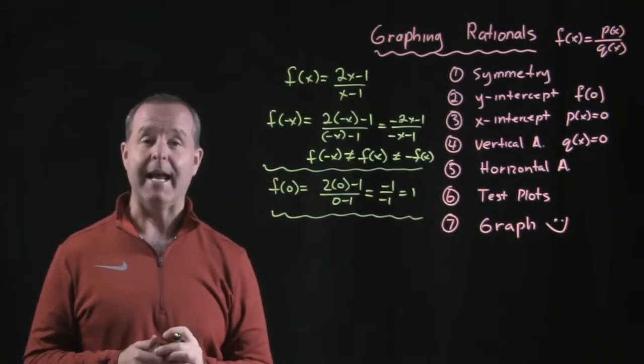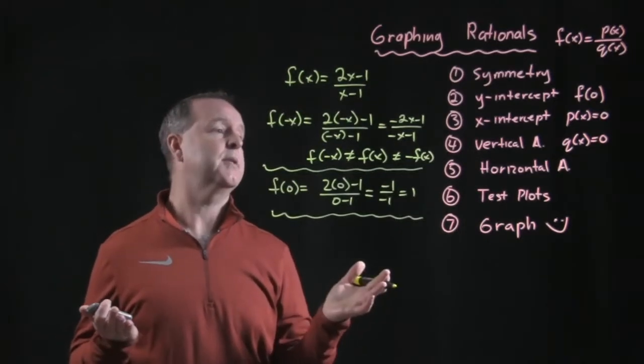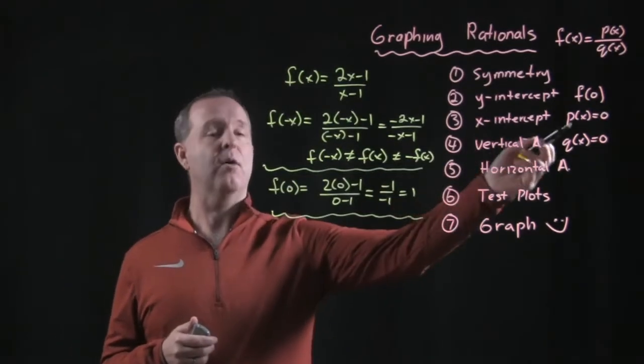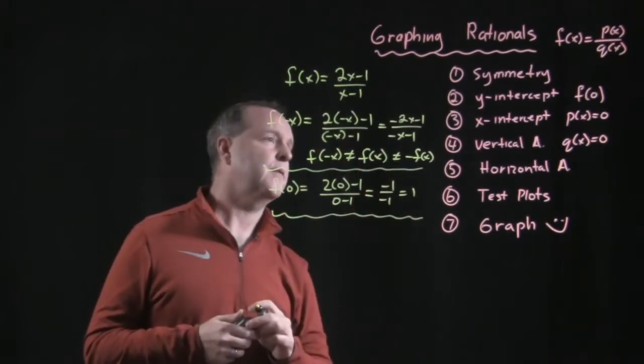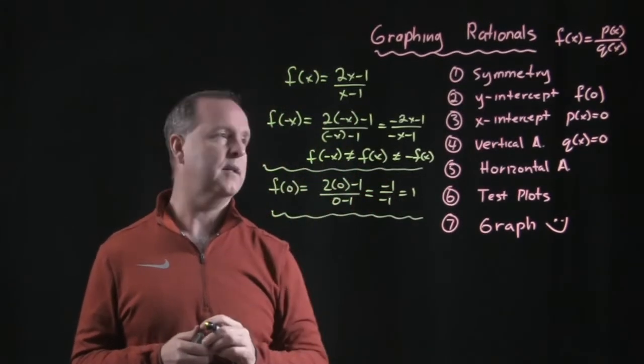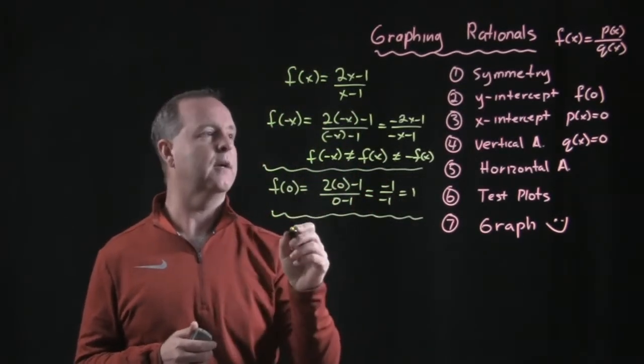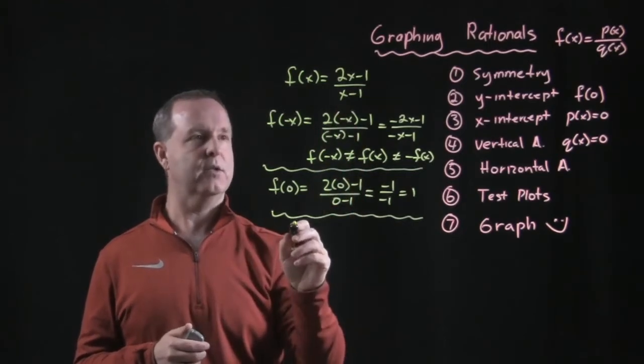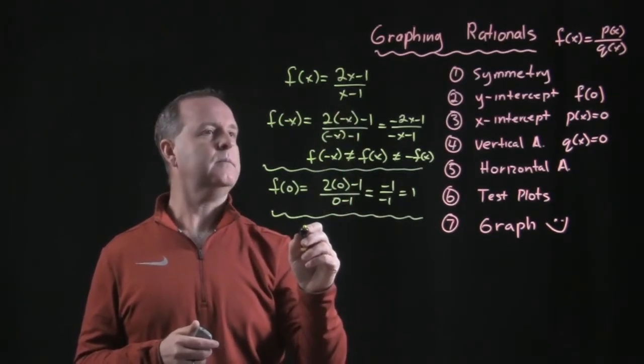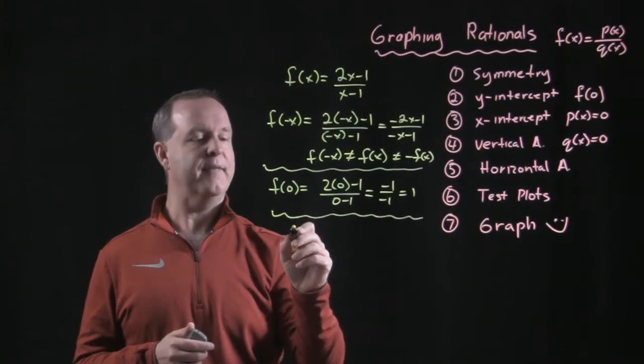Step three, look for its x-intercepts. The solution to this particular equation, we find that out by looking at the function, the polynomial function in the numerator, which is two of x, or two x minus one. So evaluate that at zero.